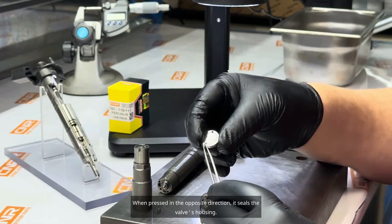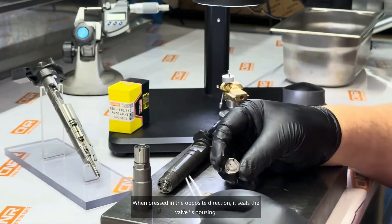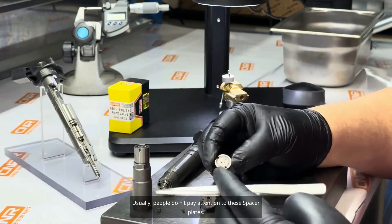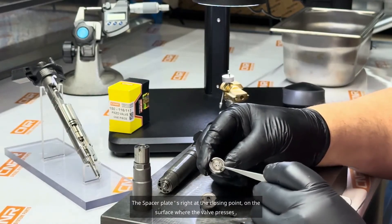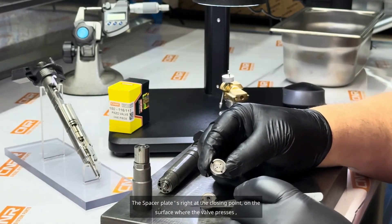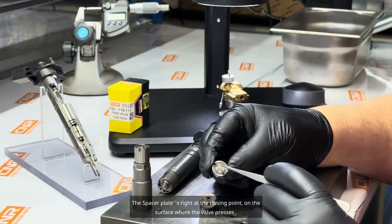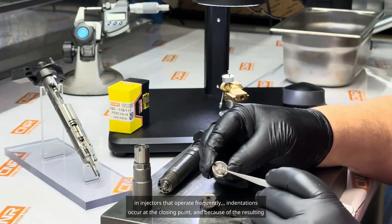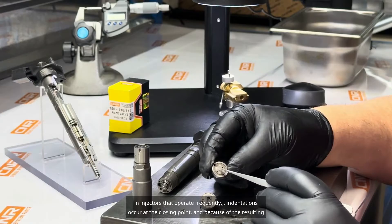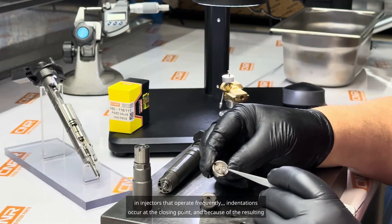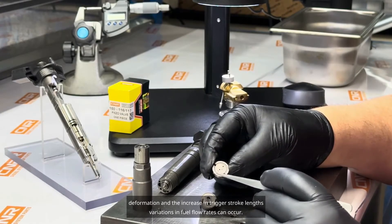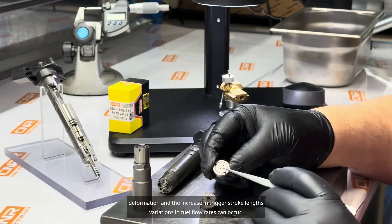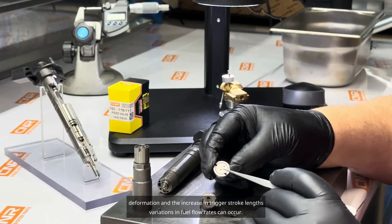When pressed in the opposite direction, it seals the valve's housing. Usually, people don't pay attention to these spacer plates. The spacer plates right at the closing point, on the surface where the valve presses. In injectors that operate frequently, indentations occur at the closing point, and because of the resulting deformation and the increase in trigger stroke lengths, variations in fuel flow rates can occur.